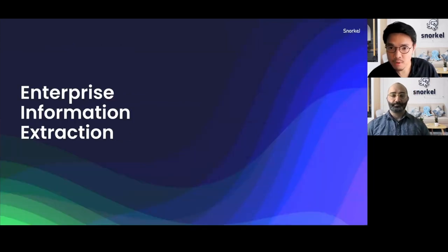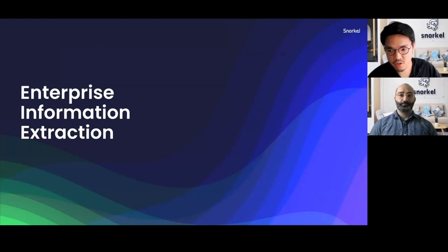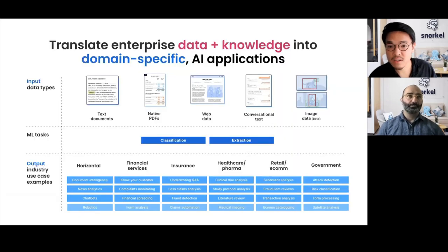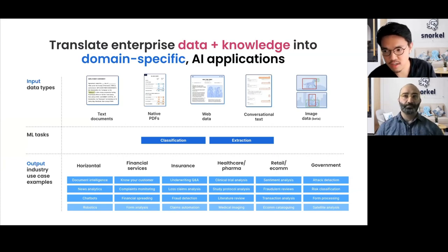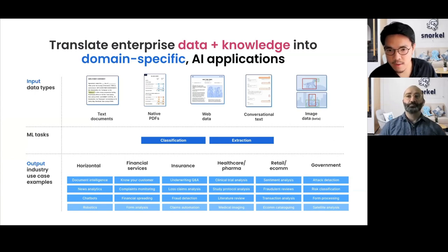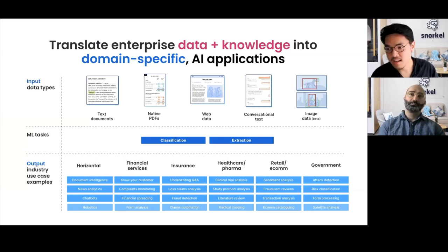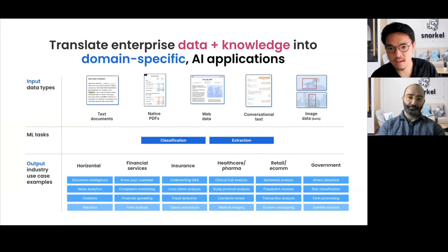So let's jump in. I'll start by framing what we mean when we talk about information extraction and connect it to some of the problems that we've seen enterprises try to solve. In practice, we've worked with a range of customers with a high-level goal of translating their specific enterprise data and knowledge into domain-specific AI. We see our users try to build a wide range of ML tasks, and information extraction is one of the most popular use cases because of the types of impacts and automation and insights that they can drive downstream.